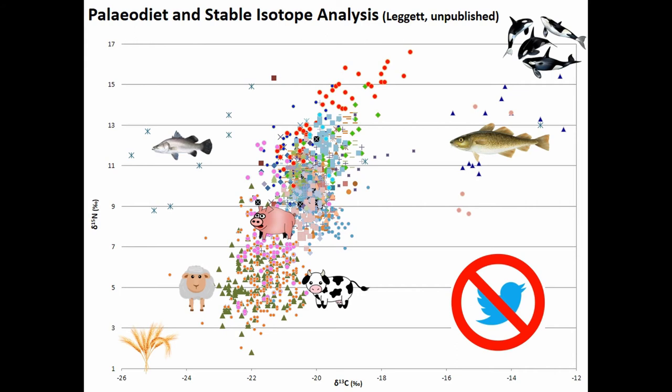This is my meta-analysis to date — it's messy, not the best graph, but just for anyone unfamiliar: different animals and food types map in different places. James Barrett gave me hell for putting orcas up there — Anglo-Saxons don't eat orcas — but it gives an idea of the range. Carbon along the baseline roughly relates to the types of plants you're eating. In Anglo-Saxon England I do not expect, and have not found, any C4 plants, so carbon is quite consistent.